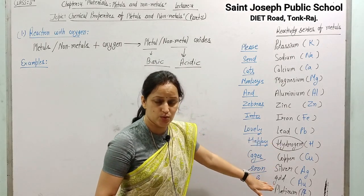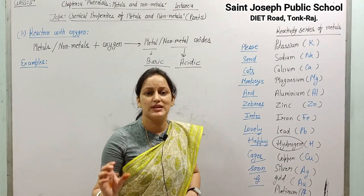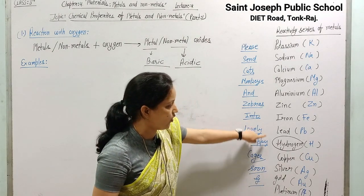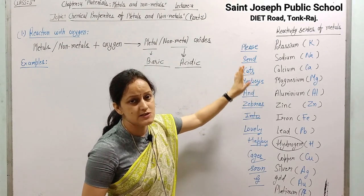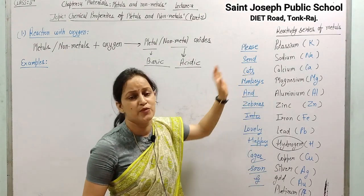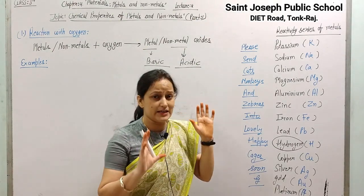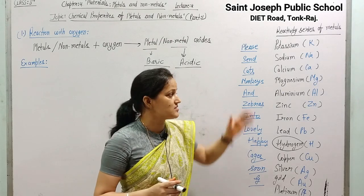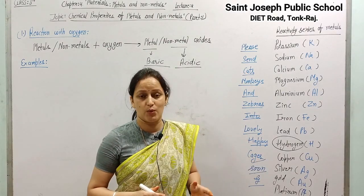This is the increasing order of reactivity of metals, starting from the bottom and moving upward. Is there any convenient method to memorize all these metals in sequence?